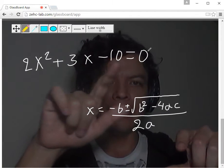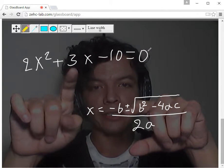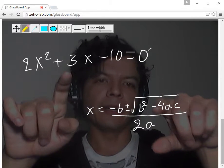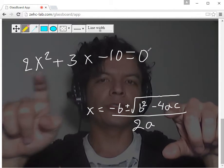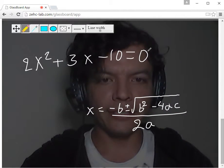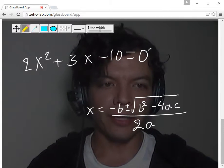This is a, b, and c. So this minus b will become minus 3. This square will become 3 square. And this will become minus 4 times 2 times minus 10. So I can use my hands to communicate in a more efficient way with my students.